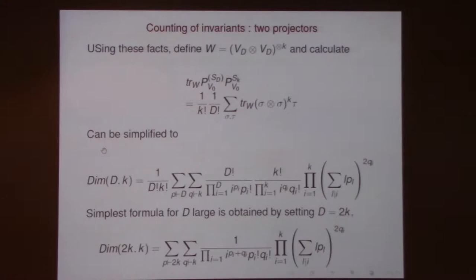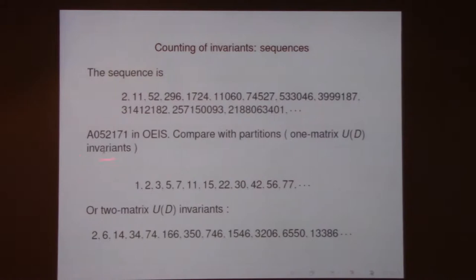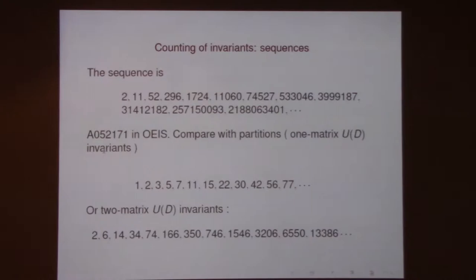This is the simplest formula for the sequence. You can work out what these sequences are. In fact, it's the sequence of directed multigraphs, recognized by the online encyclopedia: there are two linear invariants, 11 quadratic invariants, 52 cubic, and so on. It's interesting to compare this with the one-matrix U(D) invariants, where you are counting partitions. For k copies of M you have multi-traces — you can partition them into single, double traces, and so on. This is the S_D version of counting partitions.